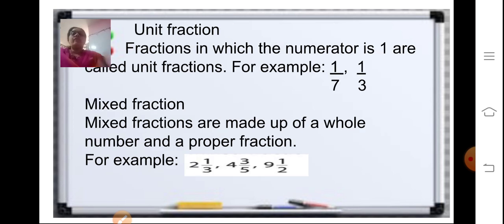Fractions in which the numerator is 1 are called unit fractions. Mixed fractions are those fractions made up of a whole number and a proper fraction — for example, 2 whole 1 upon 3, 4 whole 3 upon 5, and 9 whole 1 upon 2.